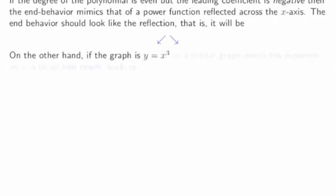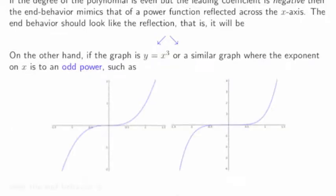On the other hand, if the graph is y equals x cubed, or a similar graph where the exponent on x is an odd power such as y equals x to the fifth, our graphs will look like this: as we move off to the left, we drop down; as we move off to the right, we shoot up. We draw two arrows to indicate this end behavior — as you move away to the left, you drop; as you move away to the right, you rise.